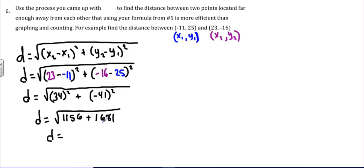Next step is to add them together. And that gives us 2,837. Then we'll take the square root and find that the distance is approximately 53.26 units.